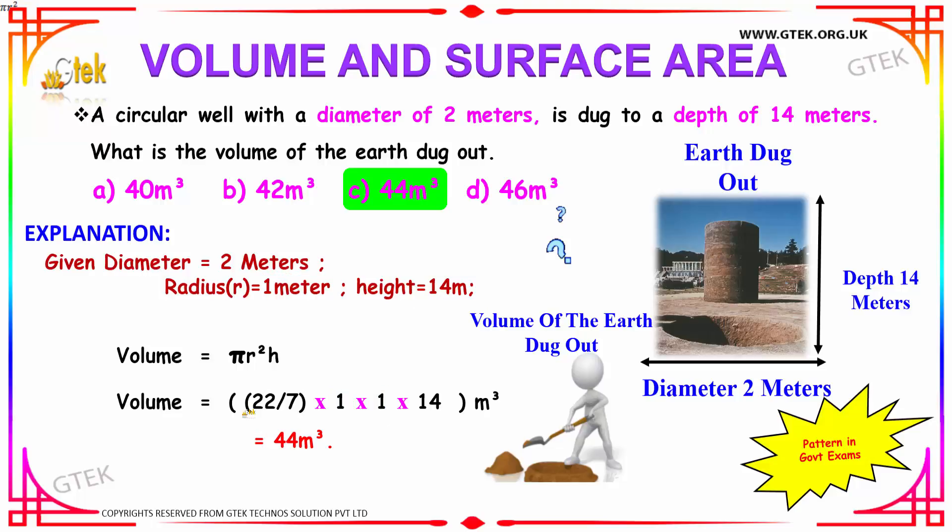We get the value 44 after solving the above equation. Hence, the volume of the earth dug out is 44 m³. So option C is your answer.